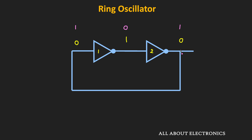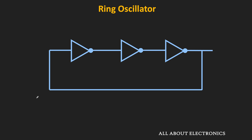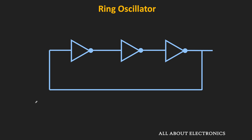For this circuit to work as an oscillator, the number of inverters should be odd. So instead of 2, if we have 3 inverters in the chain, this circuit will work as an oscillator. Initially, if the input to the first inverter is logic 0, its output is logic 1. This 1 is the input for the second inverter, whose output is logic 0. The output of the third inverter is then logic 1, and that 1 is fed back to the input. So after the first iteration, the input changes from 0 to 1, making the ring oscillator output toggle. With each iteration, the output toggles between logic 1 and logic 0, producing a square wave at the output.